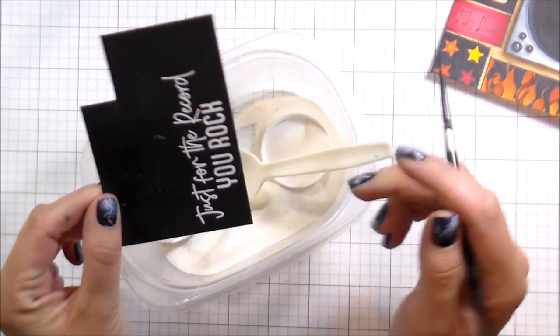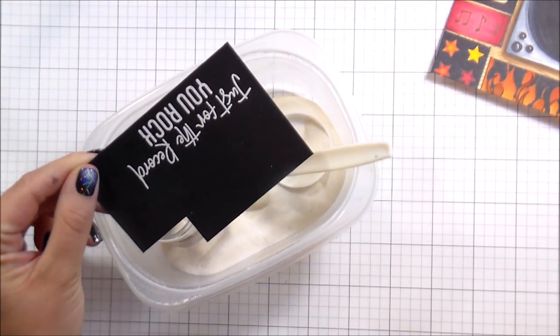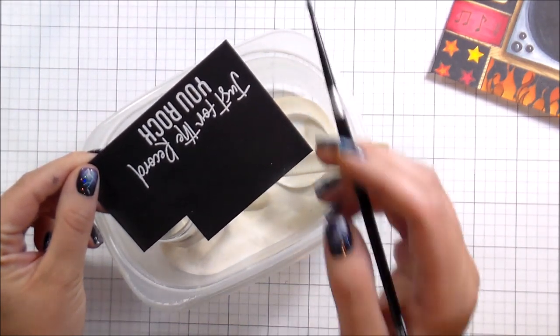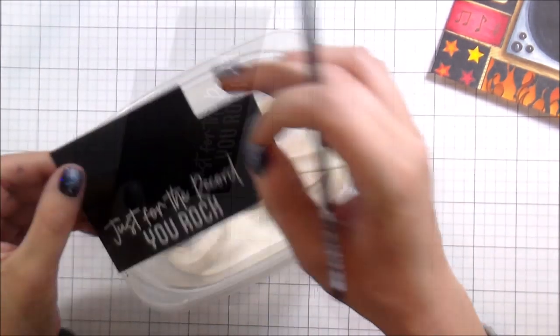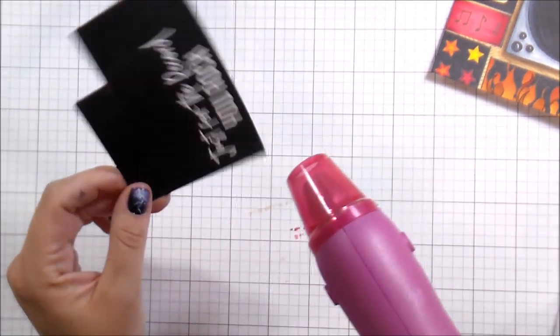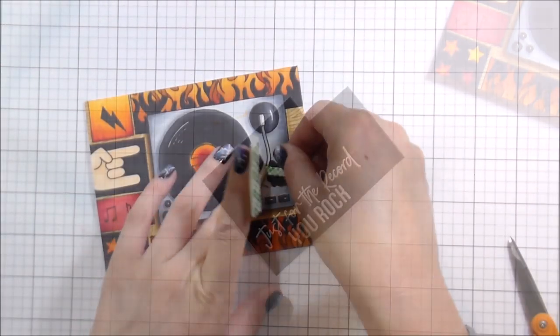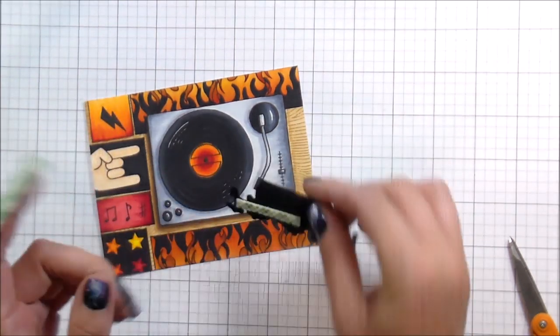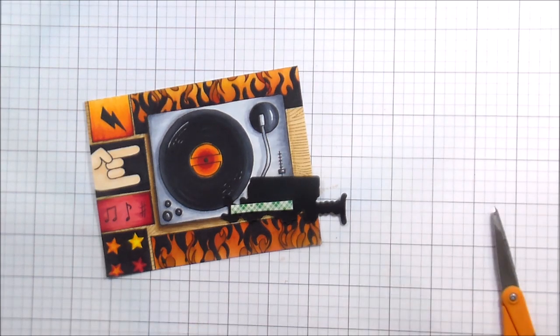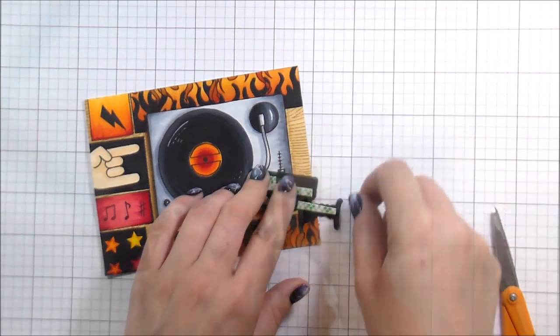Here I'm using white embossing powder on black. I stamped in Versamark. I'm just cleaning that up. I'm going to heat this up until it is all smooth and looking absolutely fancy. I'm going to run that through my die cutting machine with its matching die. And then I'm going to pop this up on some foam to complete the card.